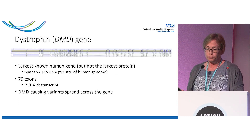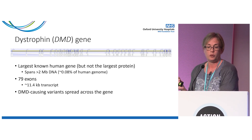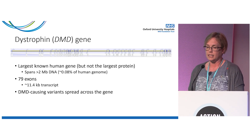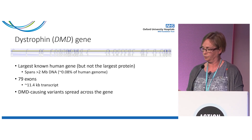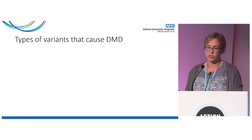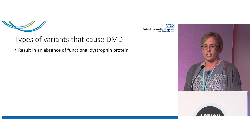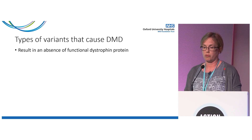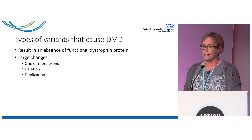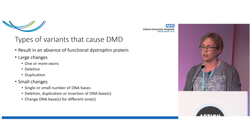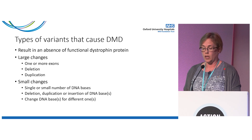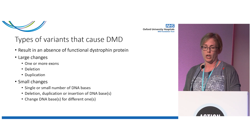The dystrophin gene's claim to fame is that it's the largest known human gene, though not actually the largest protein. It has 79 exons, and variants that cause DMD can be found virtually anywhere across this gene. The variants that result in absence of functional dystrophin protein are either large changes involving one or more whole exons — so a deletion or duplication of exons — or small changes involving a single or small number of DNA bases, including deletions, duplications, insertions, or a change of one letter for a different one.